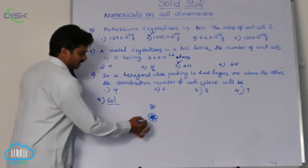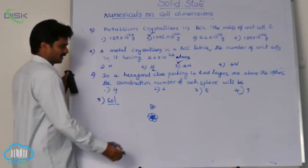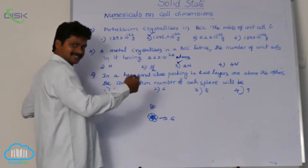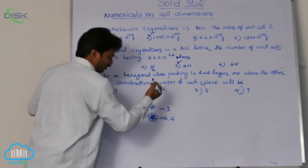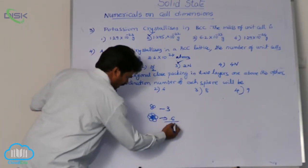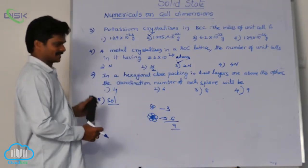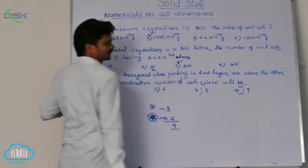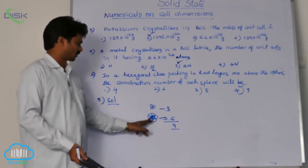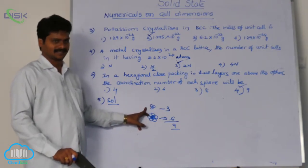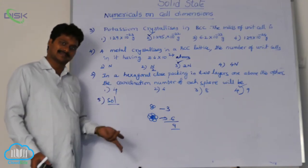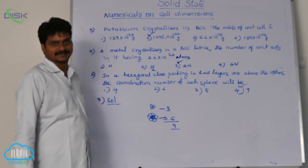So let us consider a central atom. From the same layer, six spheres are in contact. From its adjacent next layer, three spheres come into contact. So from the same layer six, from its next layer three — total coordination number is nine. From two layers of hexagonal close packing, the coordination number of any atom is nine.